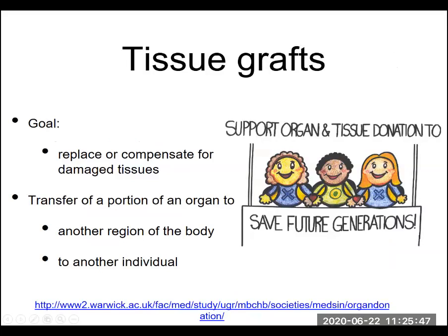At its simplest level, we can look at tissue grafts. With tissue grafts, the idea is that we're going to either replace or compensate for a damaged tissue by putting in replacement tissues. We're going to transfer a portion of the organ or tissues from another region of the body or from another individual into the patient with the damaged tissues, in the hope that these tissues will become established and allow for a better outcome.